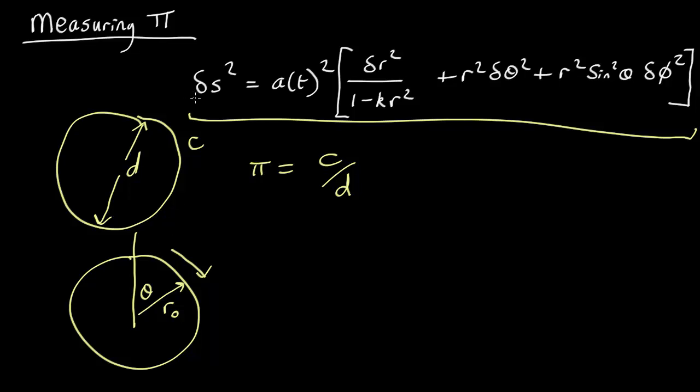Now, how are we going to use the metric to work out how big the circle is? Well, what we need to do, this metric tells us the little bit of length corresponding to a little change in any of the coordinates. So what we have to do is take a big change in the coordinates, so you're going all the way around the circle or all the way across the diameter and break it up into lots of little bits.